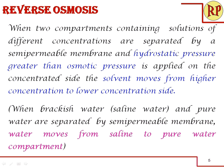Now we are going to reverse that process. This is called reverse osmosis. When two compartments containing solutions of different concentrations are separated by a semi-permeable membrane and when we apply hydrostatic pressure greater than the osmotic pressure on the concentrated site, the solvent moves from higher concentration to the lower concentration site. That is, when brackish water or sea water or saline water is separated with a semi-permeable membrane from the pure water, the water moves from saline water to the pure water compartment when hydrostatic pressure is applied on the saline water site.